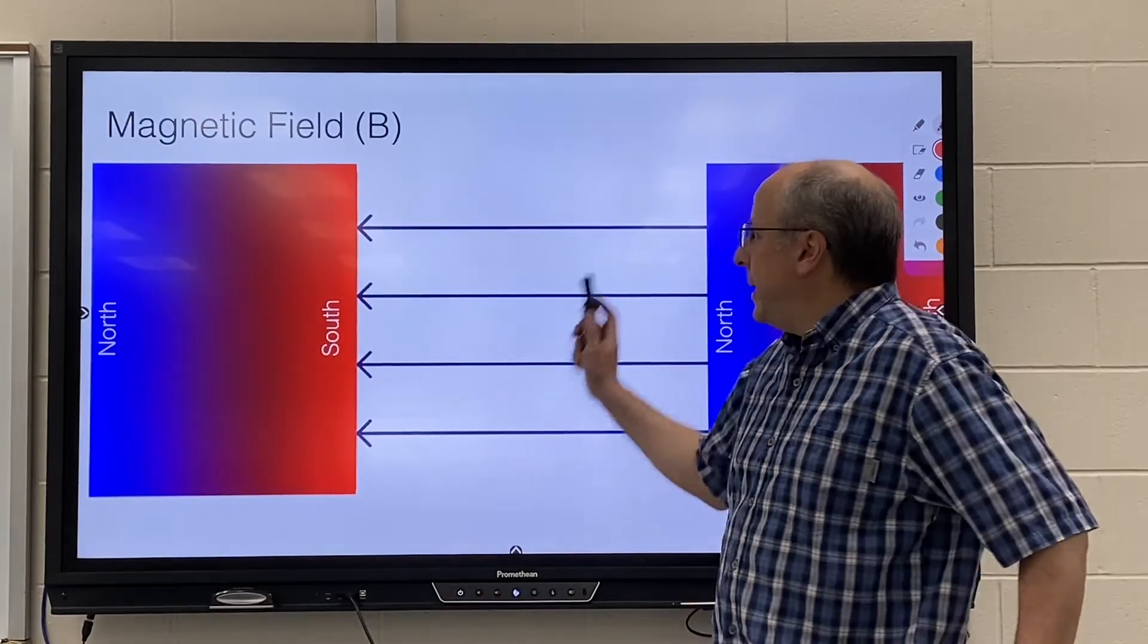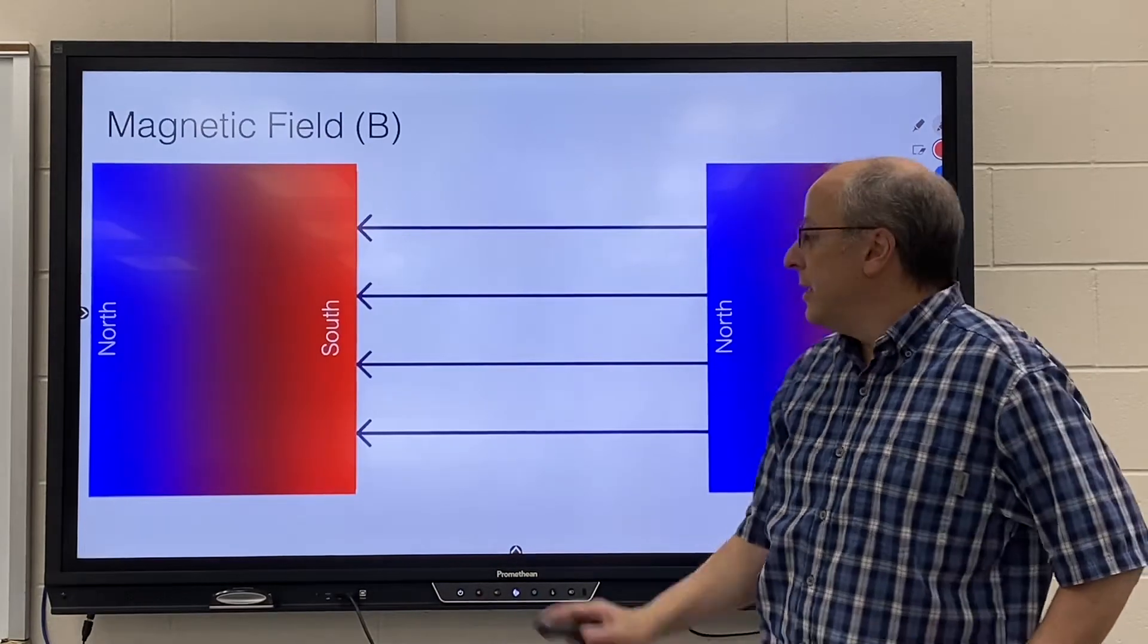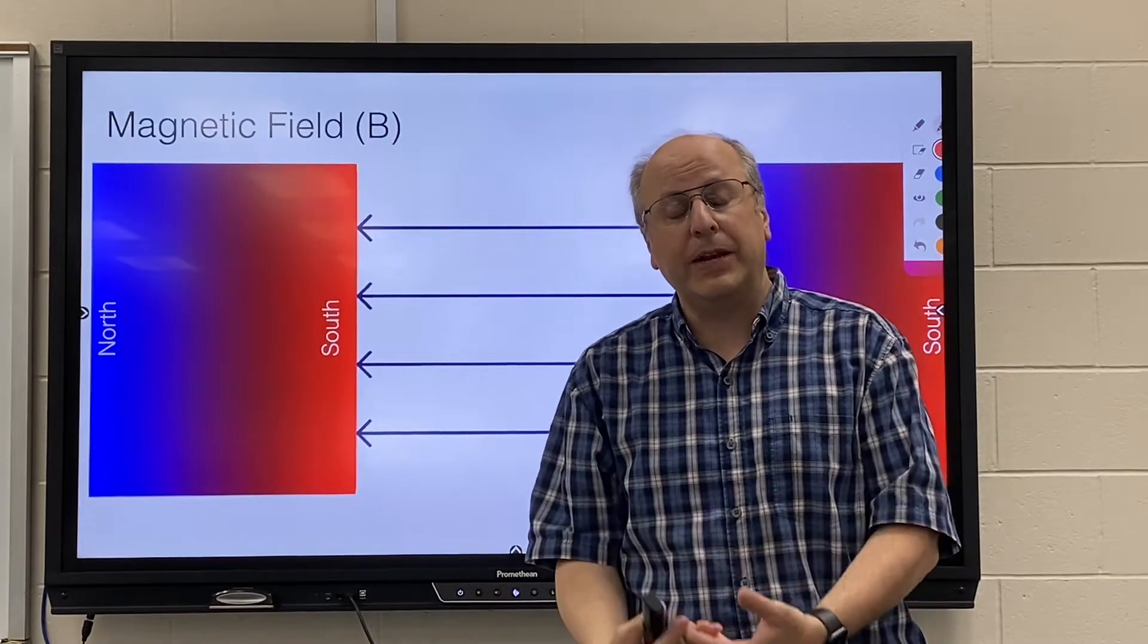Okay, so last time we learned magnetic fields go by the letter B, they're measured in Tesla. They point from north to south. We learned how to represent them in three dimensions.